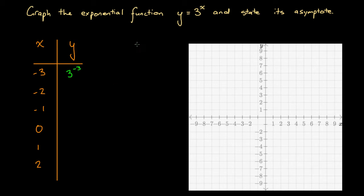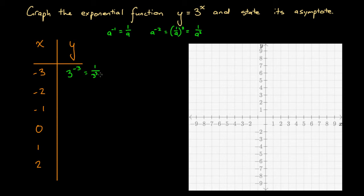According to our index laws, whenever we have a to the power of minus 1, that's 1 over a, or a to the power of minus 2, that's 1 over a squared. So here we can write 3 to the power of minus 3 is equal to 1 over 3 to the power of 3. Well, 3 to the power of 3 is 3 times 3 times 3 — 3 times 3 is 9, times 3 is 27 — so this is going to be 1 over 27.